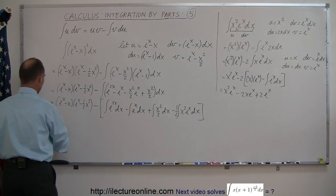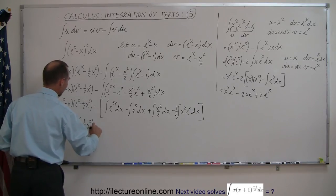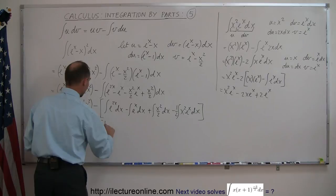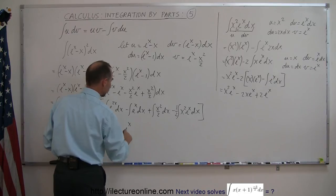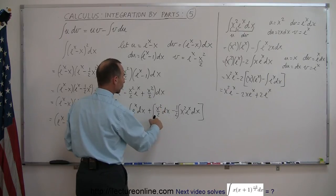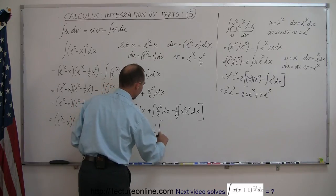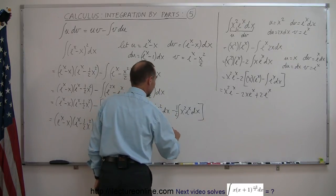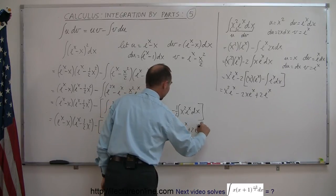Plugging everything back in, the expression becomes e to the x minus x, times e to the x minus one half x squared, minus: one half e to the 2x, minus e to the x, plus one sixth x cubed, and then minus one half times the result for x squared e to the x, which is x squared e to the x minus 2x e to the x plus 2e to the x.